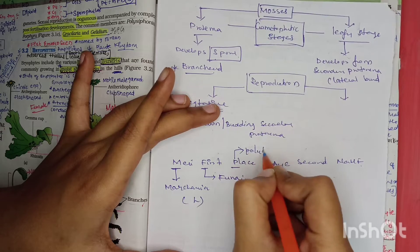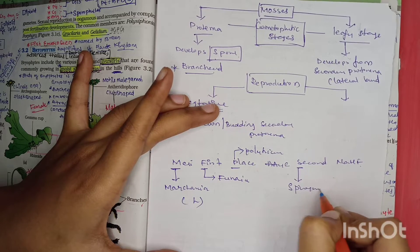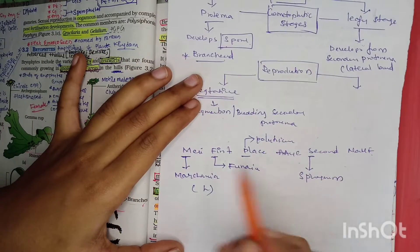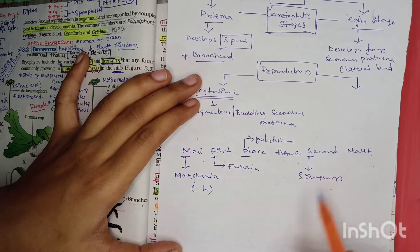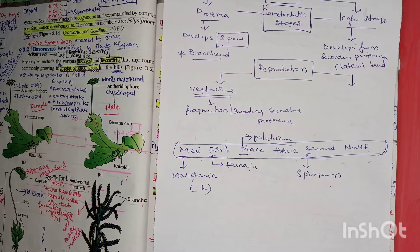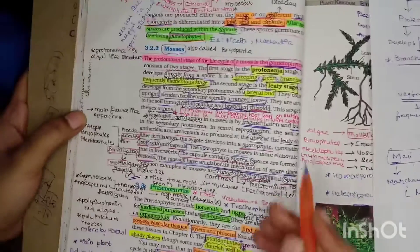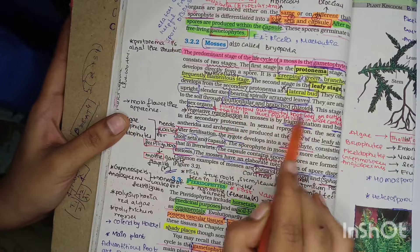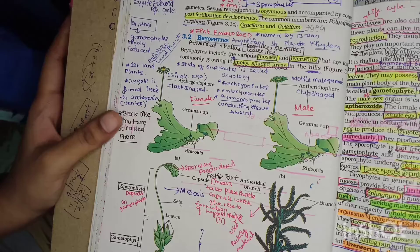For mosses, the examples to remember are Funeria, Polytrichum, and Sphagnum. A very important point to remember is that in mosses, the rhizoids are multicellular and branched. That covers the topic of bryophytes.